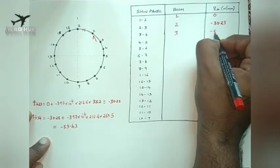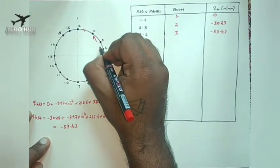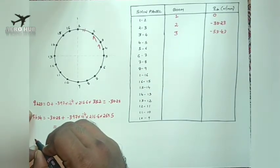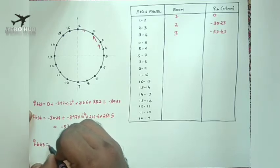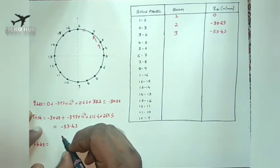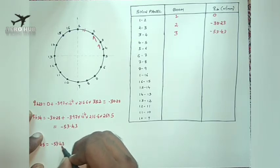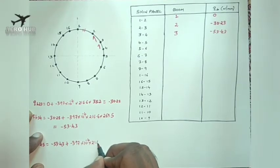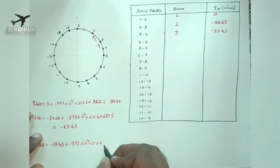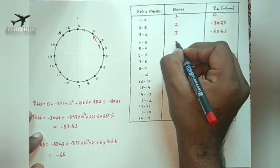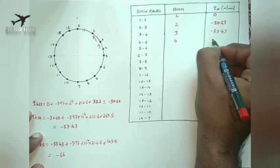For skin panel 3-4, the answer is minus 53.43 and this is also in the anti-clockwise direction. Similarly for QB4,5, we consider the previous shear flow of minus 53.43 plus minus 3.97 into 10 power minus 4 into 216.6. The distance of boom 4 from the neutral axis is 145.8. I will be getting an answer of minus 66 for skin panel 4-5.